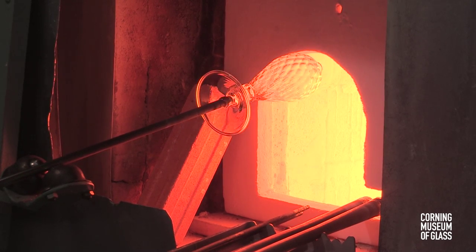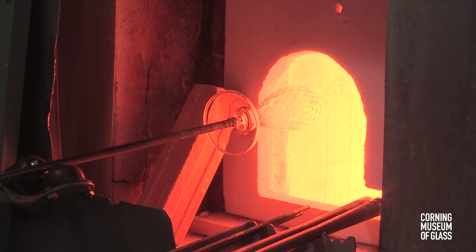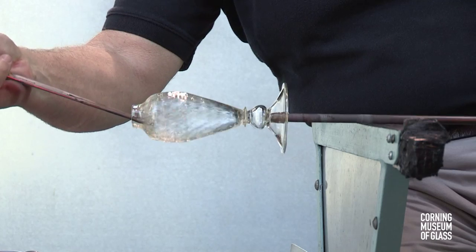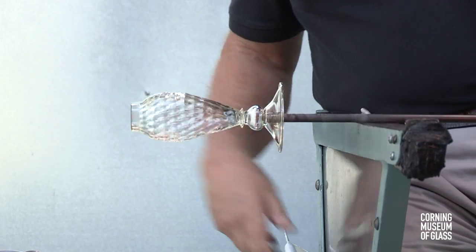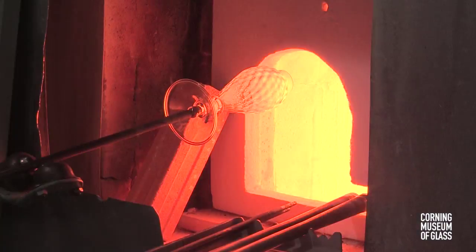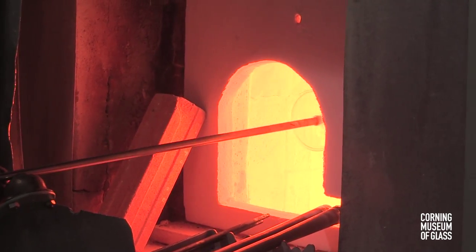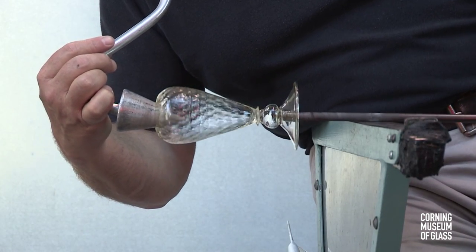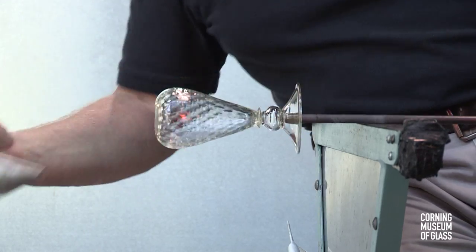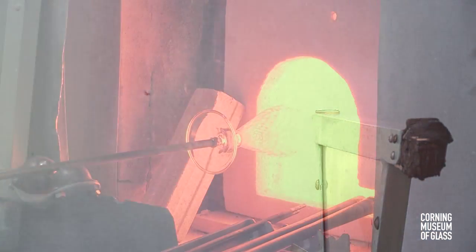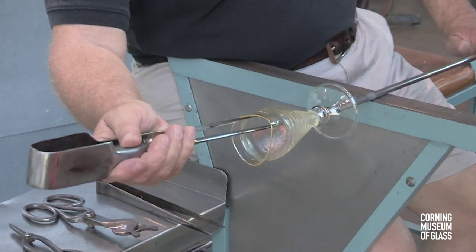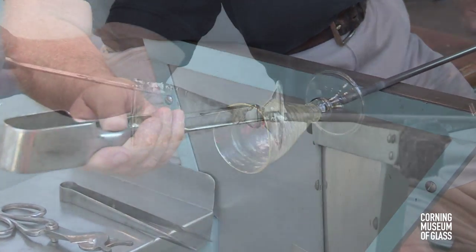The opening process begins. After opening the hole to the diameter of about an inch and reheating it, the soffietta is used to shape the uppermost part of the bowl. With more reheating and tooling, the glass is given its final shape.